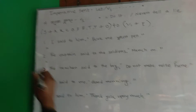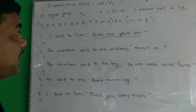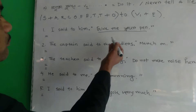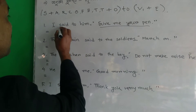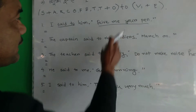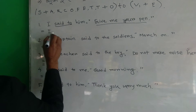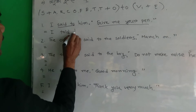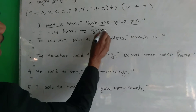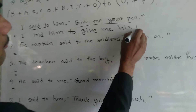Now consider: I said to him, give me your pen. This reported speech indicates a tone — it is a request. If it is a request, you will use 'requested' instead of 'said to.' So the sentence becomes: I requested him to give me his pen.